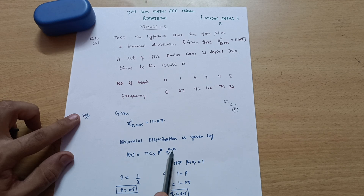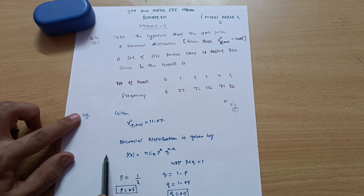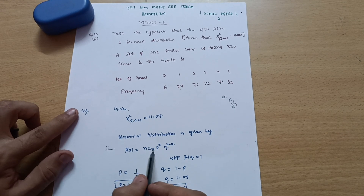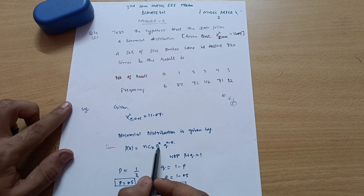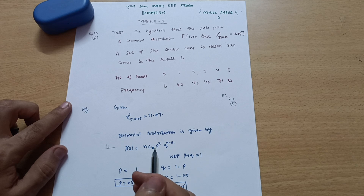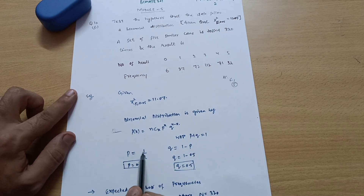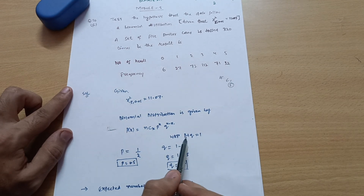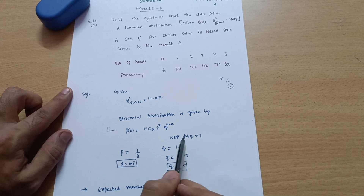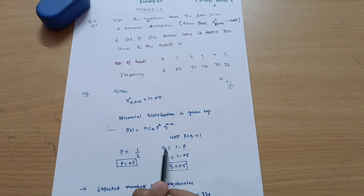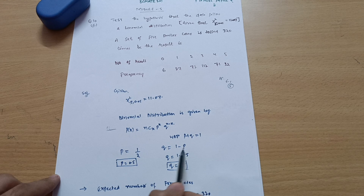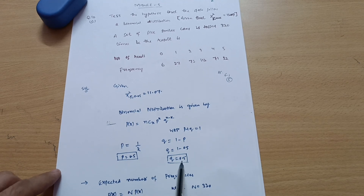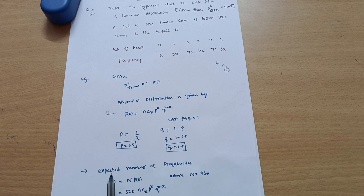The binomial distribution is given by P(x) = nCx · p^x · q^(n−x). When a coin is tossed, the probability of heads is 50 percent, so p = 0.5. Since p + q = 1, we get q = 1 − p = 1 − 0.5 = 0.5.